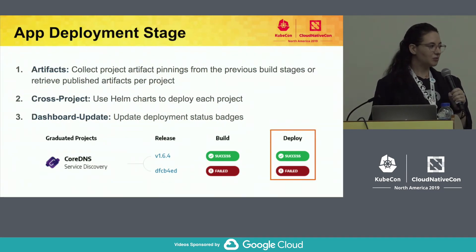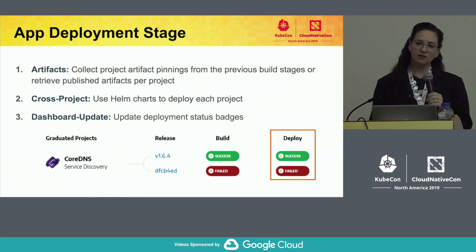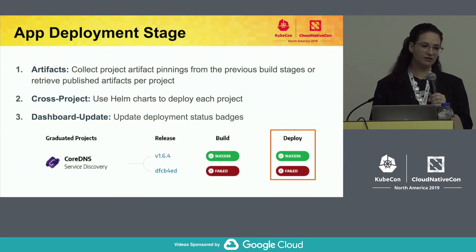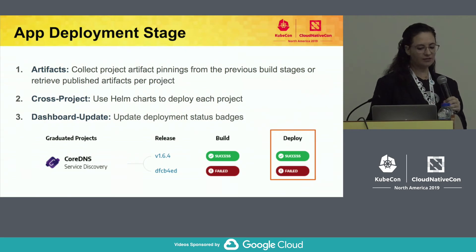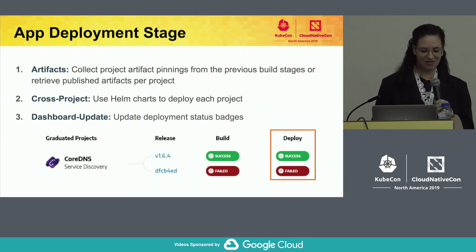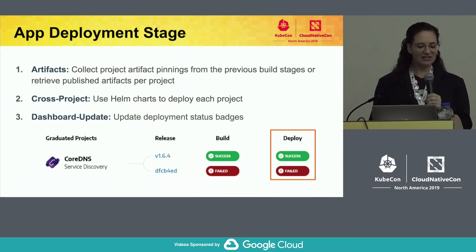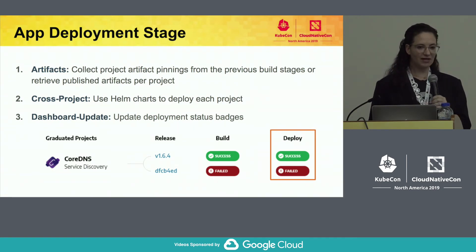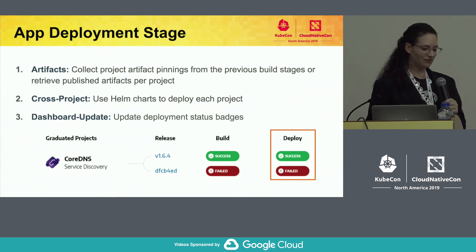For app deployments on the provisioned test environments, the CI testing system collects the build artifacts, uses Helm charts, and then visualizes the deployment status on the dashboard. For an in-depth look at how we implemented some of these stages and technologies, we'll have a deep dive tomorrow morning at 10:55.